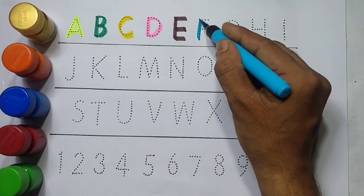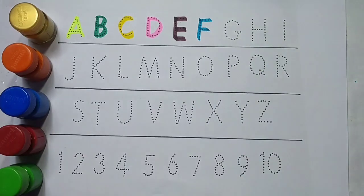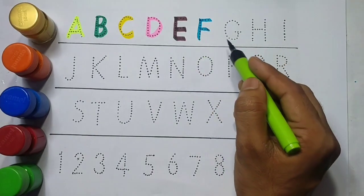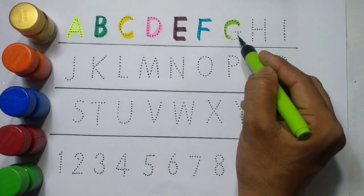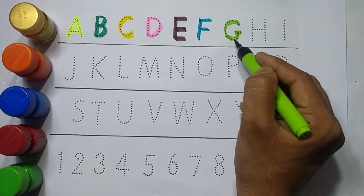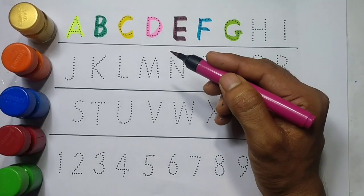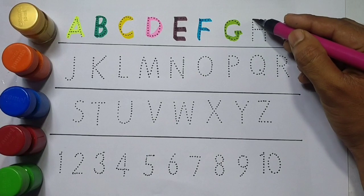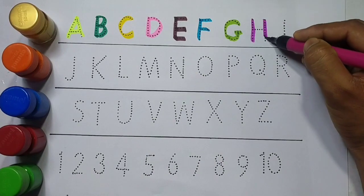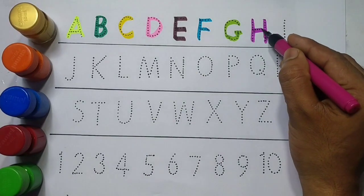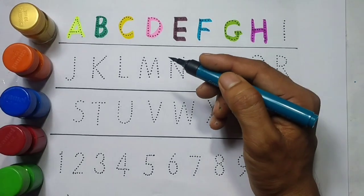F for fish, light green color. G for grape, purple color. H for hen, green color.